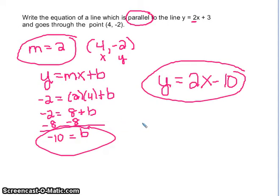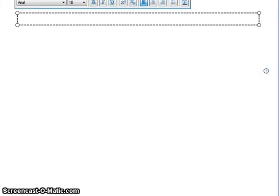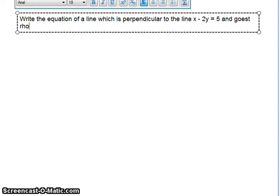Hopefully I'm still doing math right, because it's late. I'm going to do one example of perpendicular, and then you guys are going to be on your own to work some problems out. Write the equation of a line which is perpendicular to the line x minus 2y equals 5, and goes through the point 7, 1.